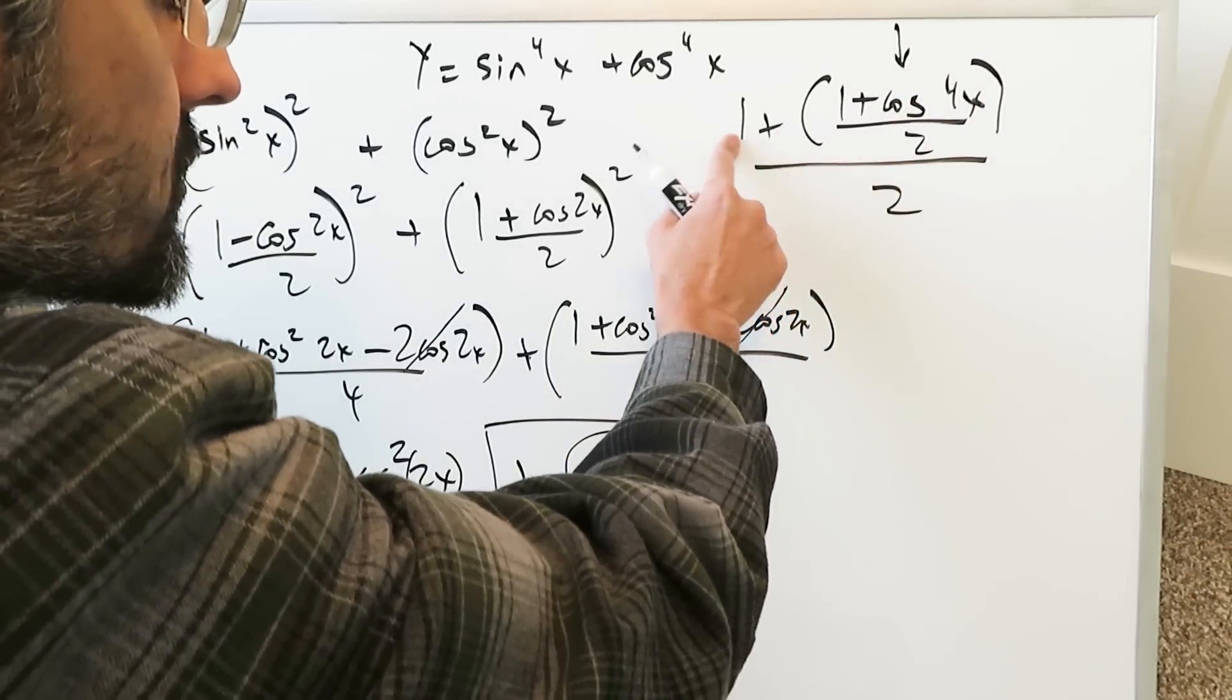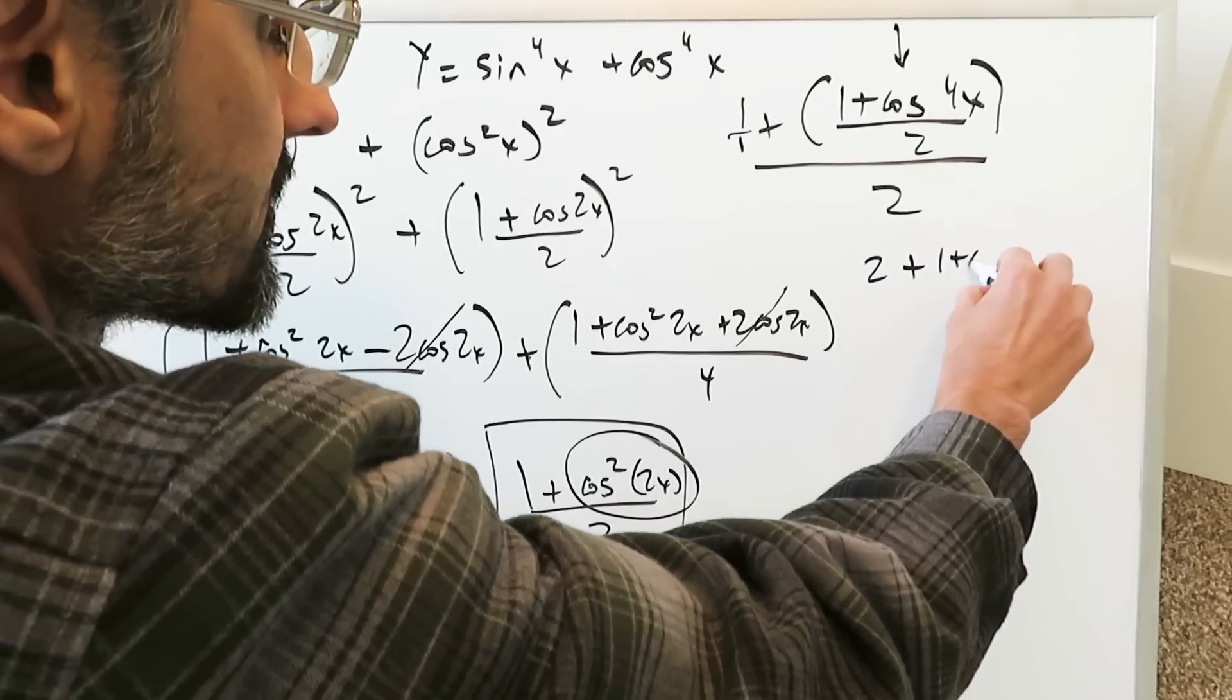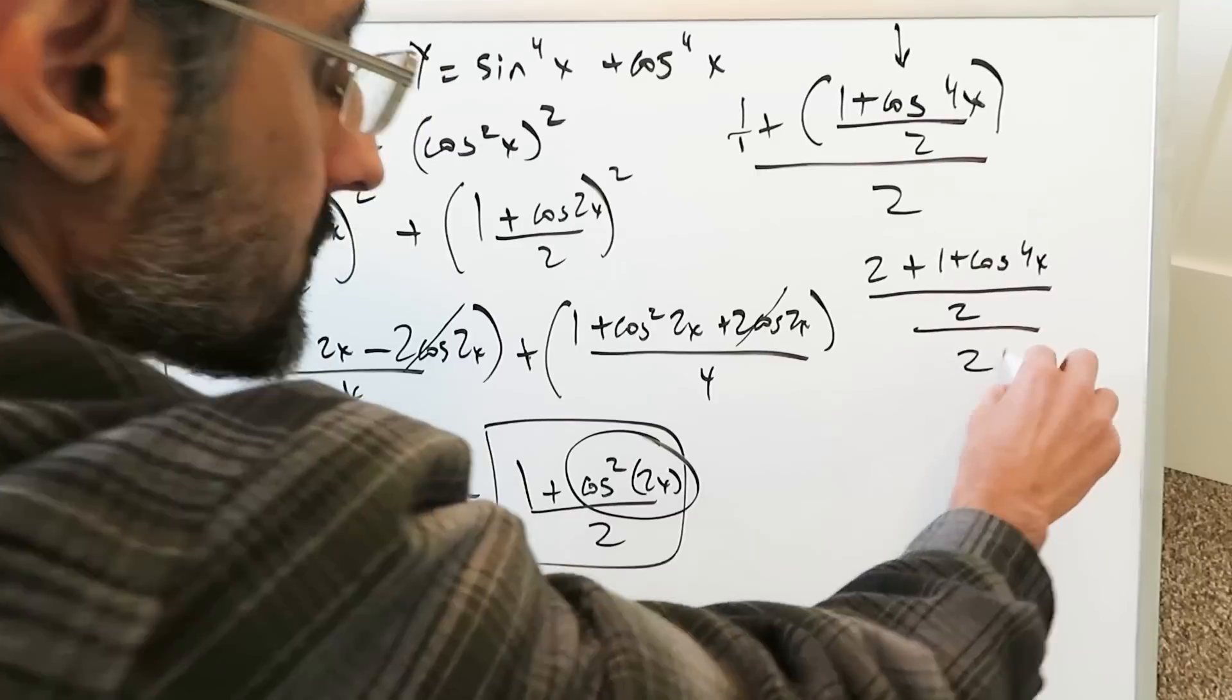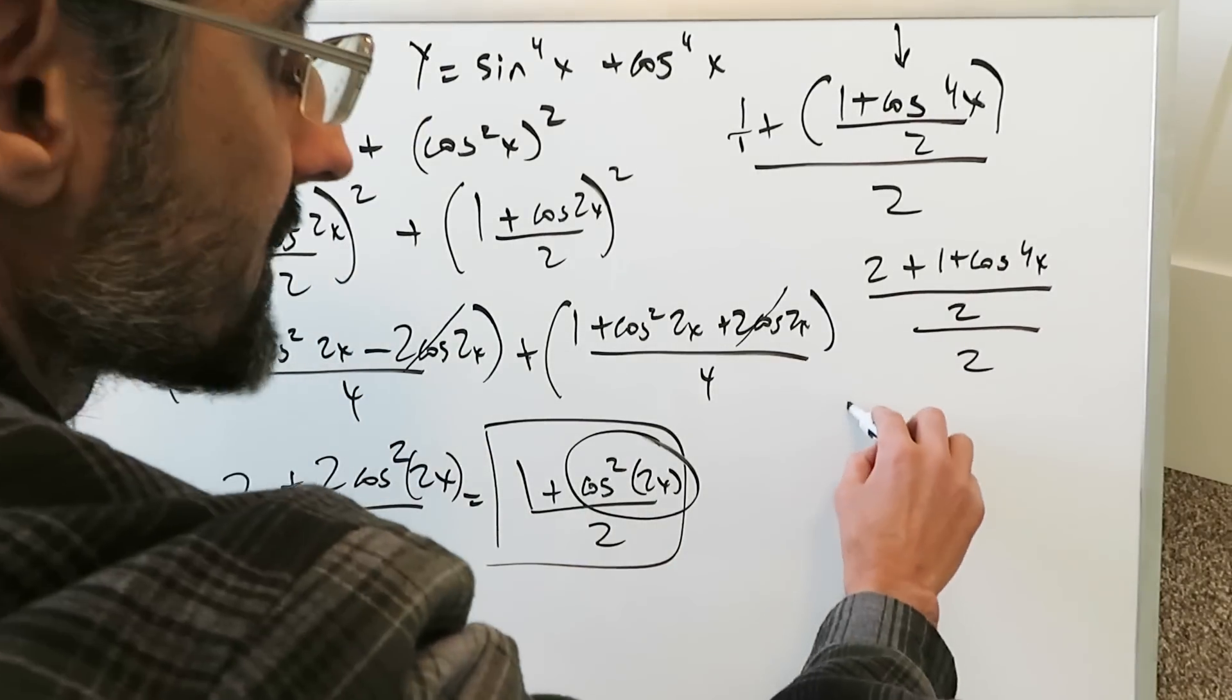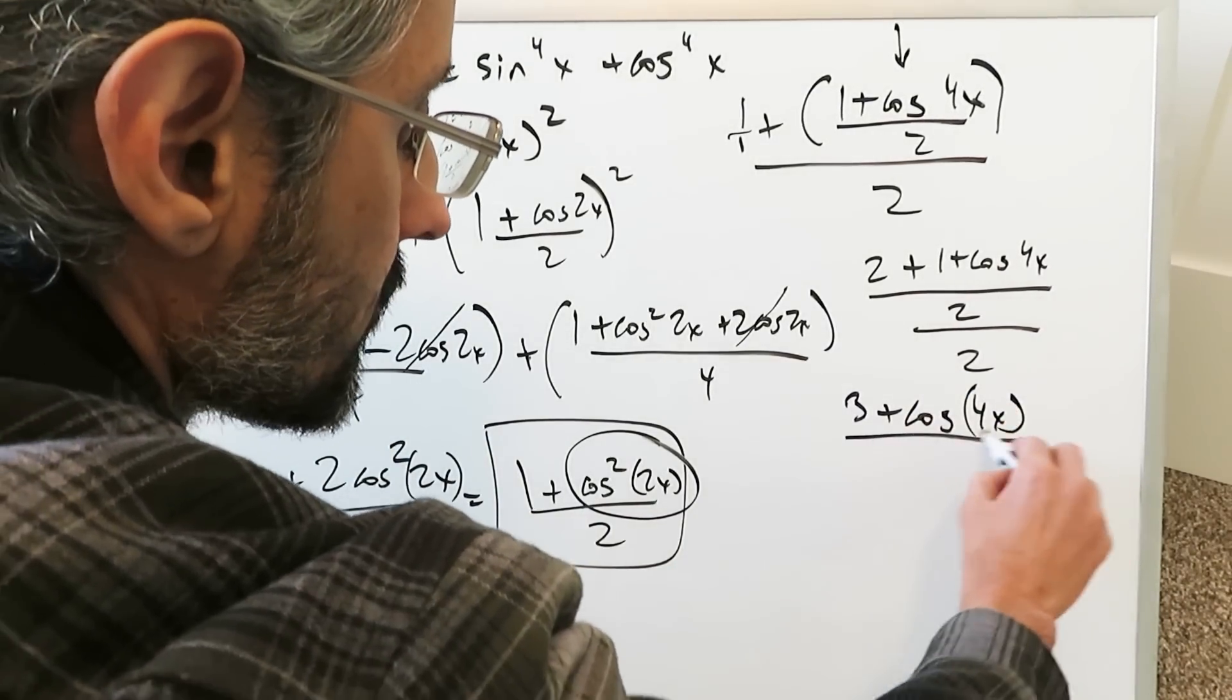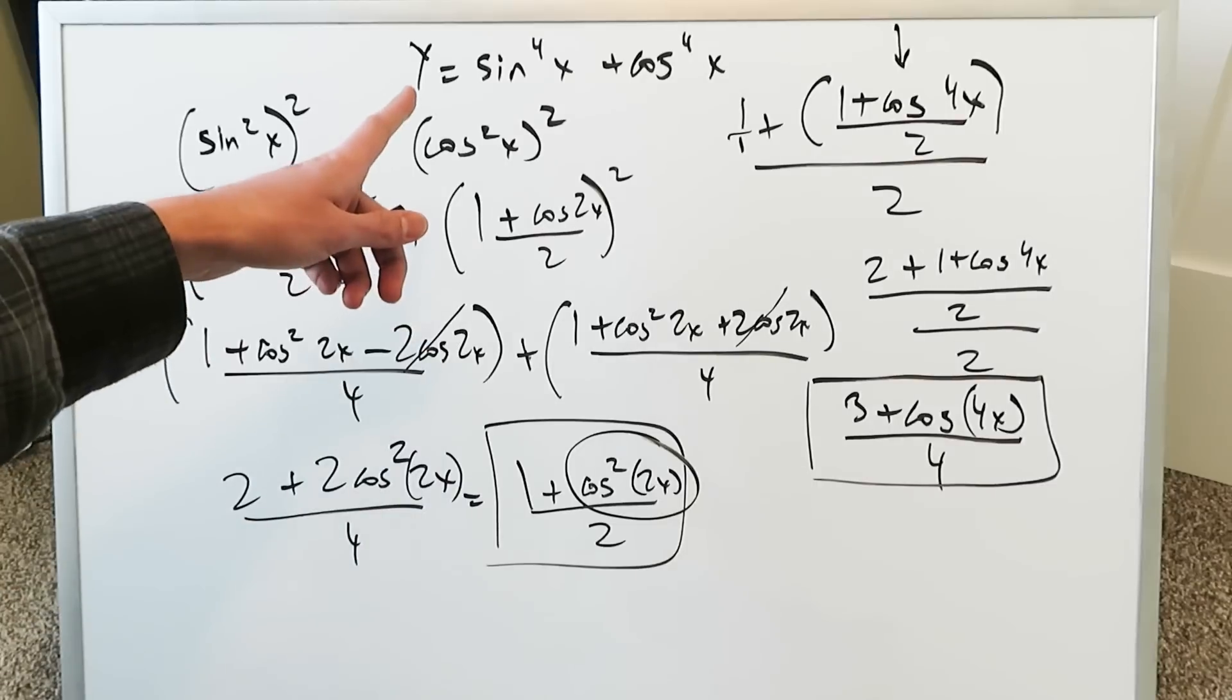Now do a common denominator here in the numerator. You have a 1 over 1. You'll have a 2 plus 1 plus cosine 4x all over 2 all over 2. You combine everything you have a 3 plus cosine 4x all over 4 and that right there would be your simplified expression.